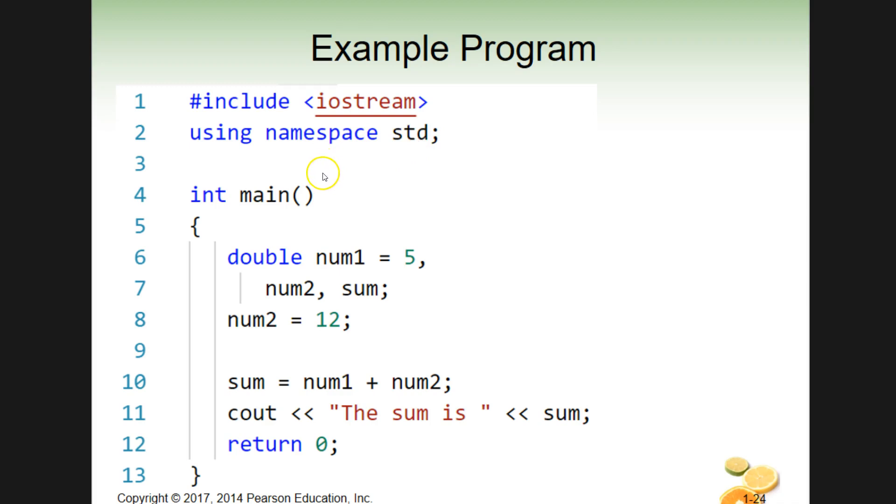That stands for input output stream. So we're including different things. And again, we'll break this down as we get into it more. This is our main function. We have a few things here that we're defining. Double, this is a type of number as a float.